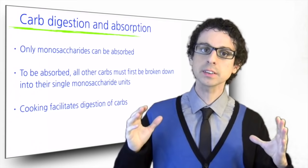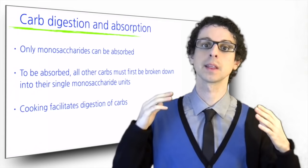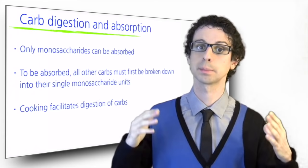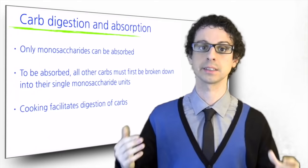Cooking facilitates carb digestion. It softens connective structures in fibrous parts of plants, and it hydrates starches, making them more digestible. So much so that if we were to eat some raw potato, chestnut, pasta or rice, their starches would mostly travel intact through our small intestine without being absorbed.